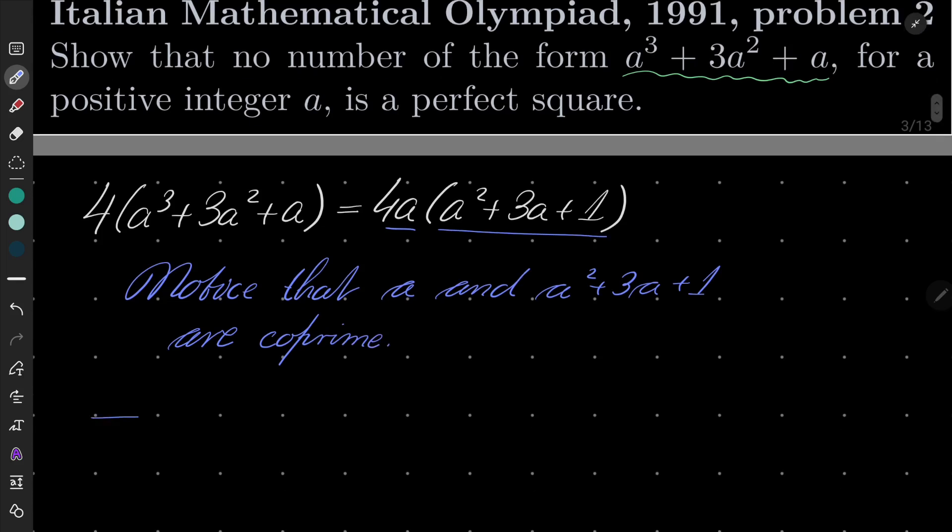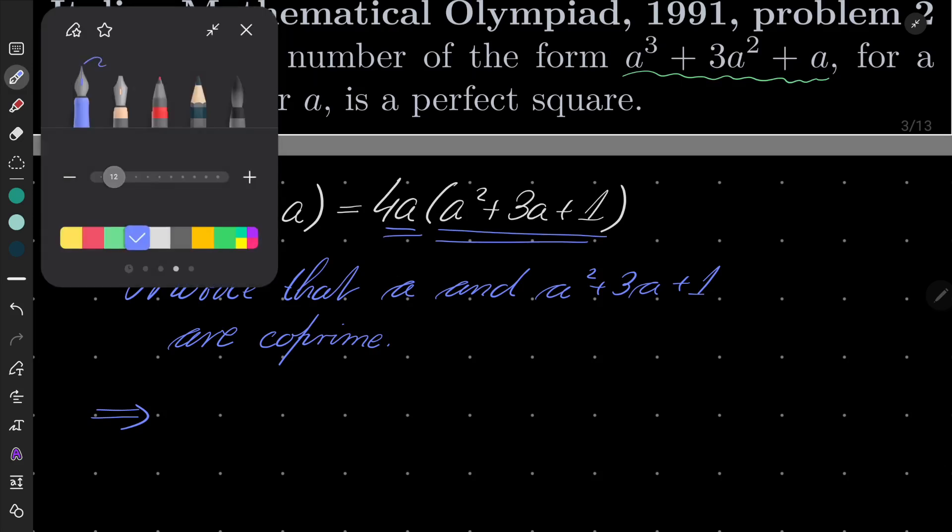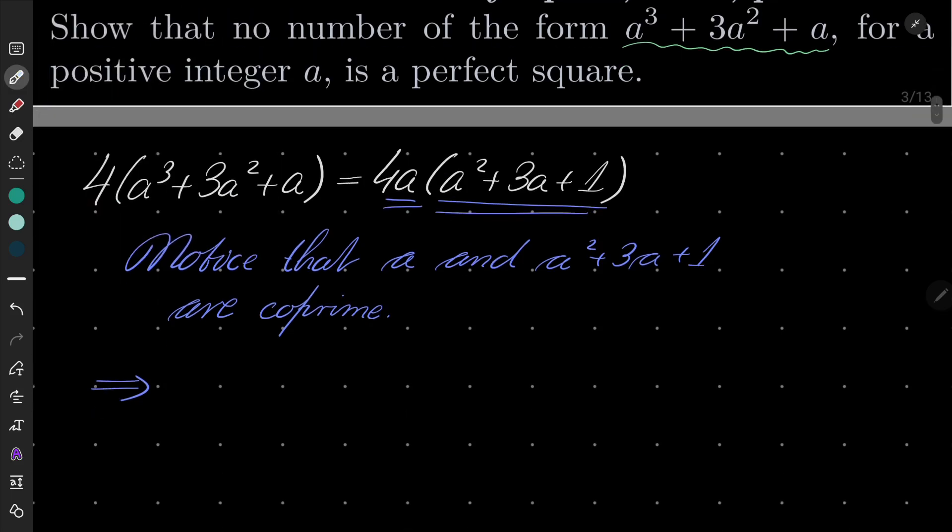Which means, look, if this number is a square, since these two numbers are coprime, both of these expressions should be squares as well. So 4(a² + 3a + 1) should be a square. a should be a square as well, but we won't use it.